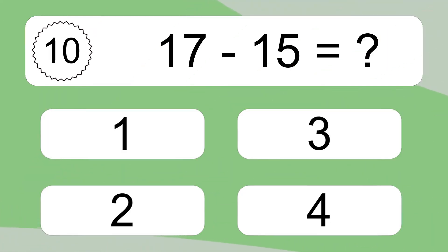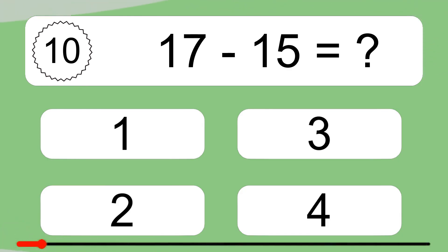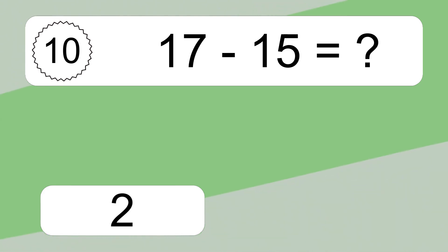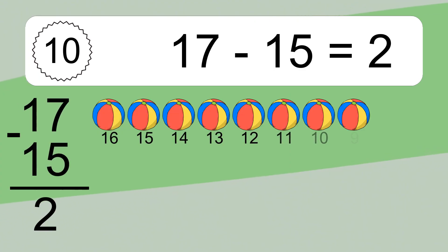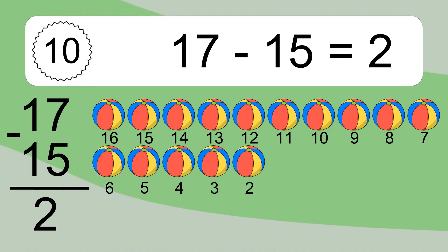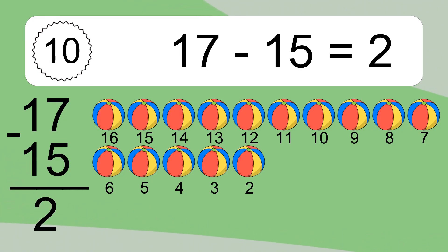17 minus 15 equals what? 17 minus 15 equals 2. Let's count it: 16, 15, 14, 13, 12, 11, 10, 9, 8, 7, 6, 5, 4, 3, 2.